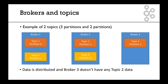Broker three doesn't have any topic two data because there are only two partitions and you have three brokers. It's really important to understand that not every broker has every topic — data is spread out. If you're interested in partition two of topic one, you'll have to go to broker two. But if you connect to broker one, you'll also be connected to broker two and three, and Kafka will know which brokers to route you to.